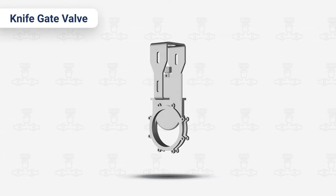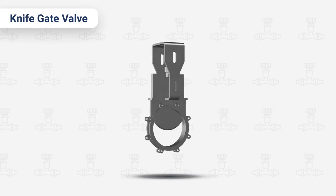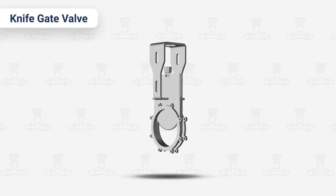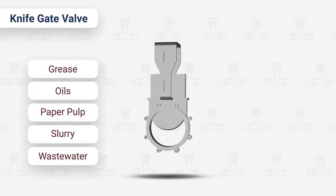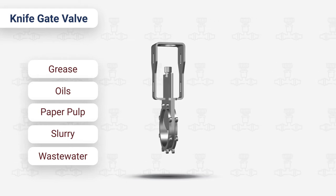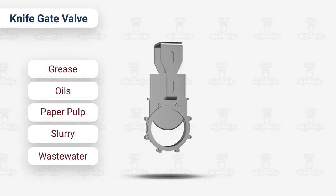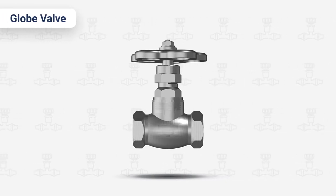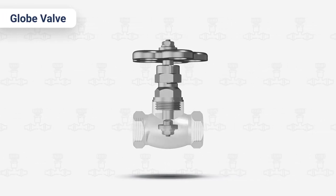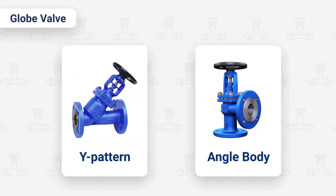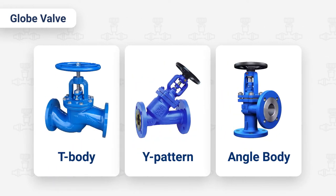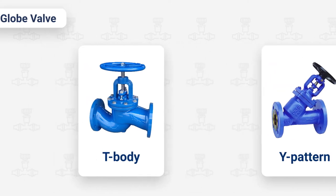While not suited for high-pressure implementations, these valves are ideal for use with grease, oils, paper pulp, slurry, wastewater, and other media which might obstruct the operation of other valve types. Globe valve. Globe valves are typically applied in modulating control operations. Typically available in three body types: T-body, Y-pattern, and angle body.